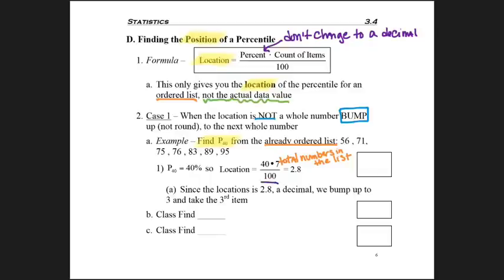So then what happens is because 2.8 is a decimal number, then we go ahead and bump up. Now in this case, it would have also rounded up, but it's always best to bump. So 2.8 bumps up to the number 3.